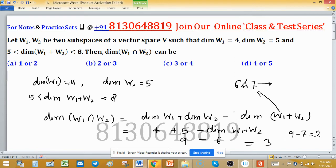So dimension of intersection is either 2 or 3. According to this calculation, we can say option B is correct.